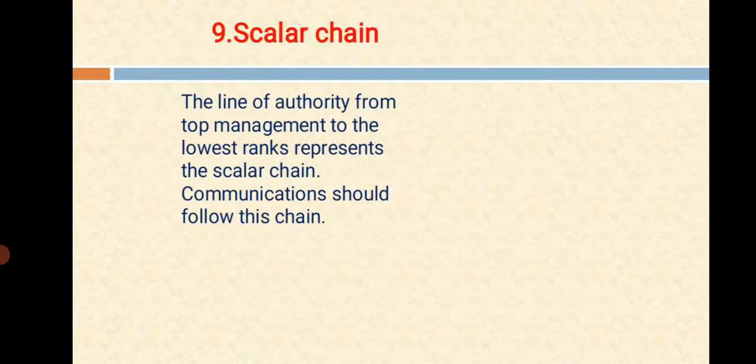And the next one is Scalar Chain. Fayol on this principle highlights that the hierarchy step should be from the top to the lowest. This is necessary so that every employee knows their immediate senior. Also, they should be able to contact any if needed. The line of authority from top management to the lowest rank represents the scalar chain. Communication should follow this chain.